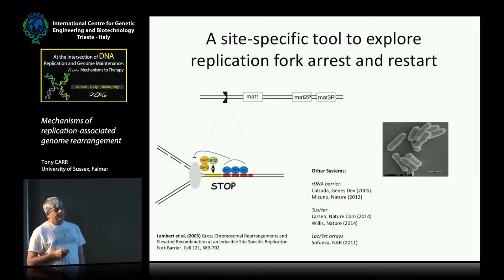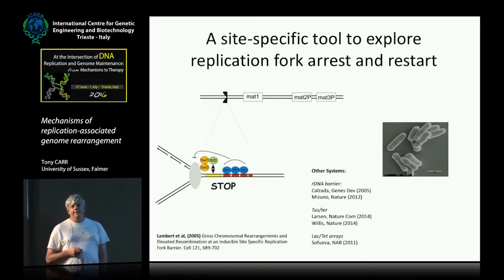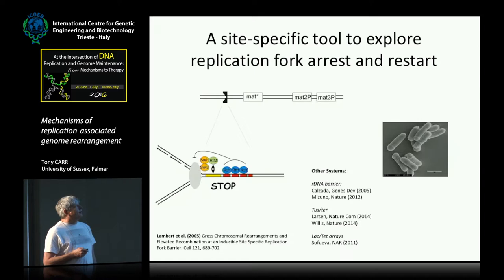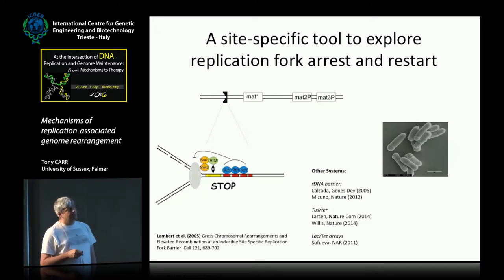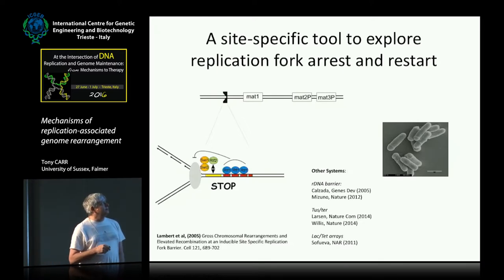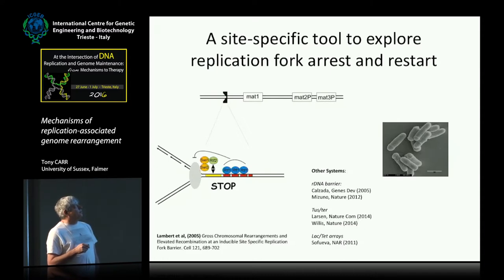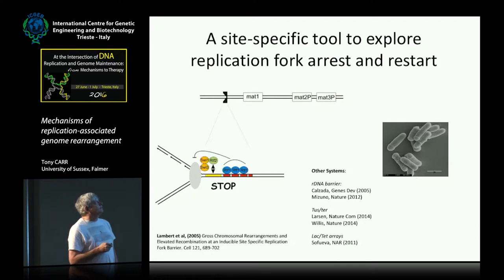Driven by the success of things like the HO double-strand break system developed by Jim Haber, we decided to try and set up a site-specific tool to explore replication fork arrest and restart. We chose this method based on a small sequence which is located close to the mating-type switching locus in fission yeast.